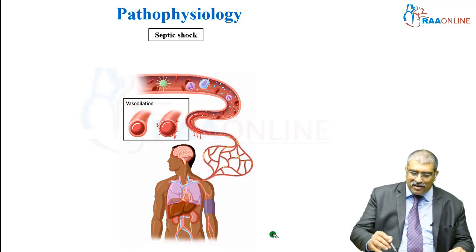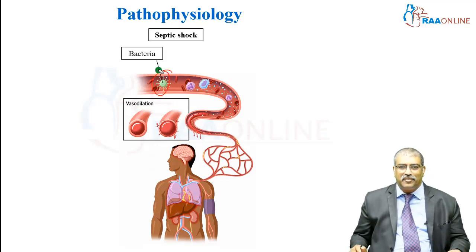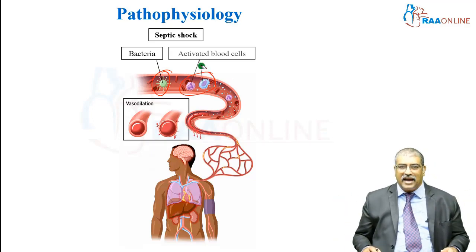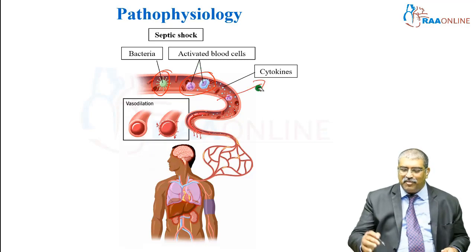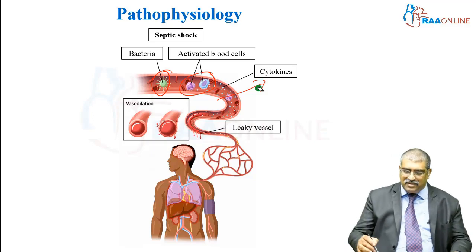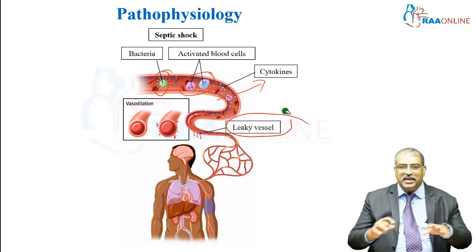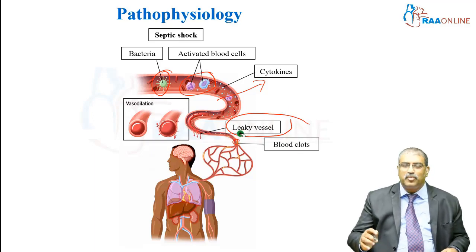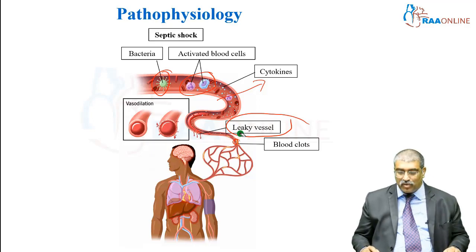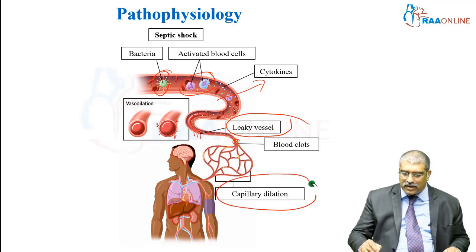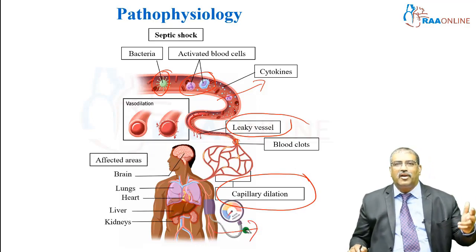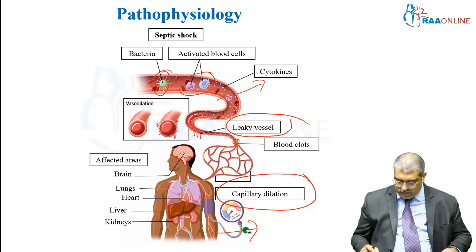When you have a pathogen, such as bacteria, your cells get activated. Your WBC and macrophages get activated and they release inflammatory mediators — cytokines, interleukins — everything gets released. These inflammatory mediators cause leaky vessels and can lead to small blood clots causing thrombosis, where platelets play a major role. There is also widespread capillary dilatation which leads to hypotension, and your organs — brain, lung, heart, liver, and kidney — will be affected.